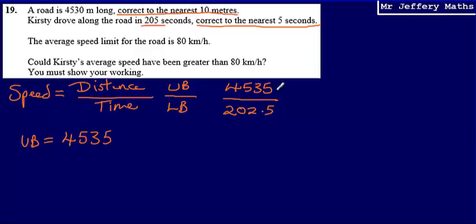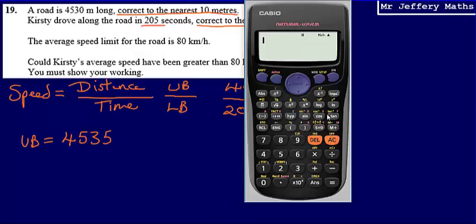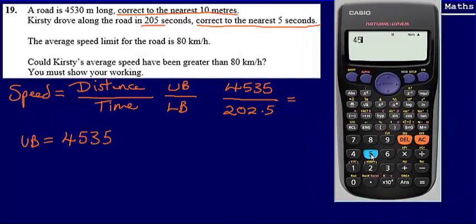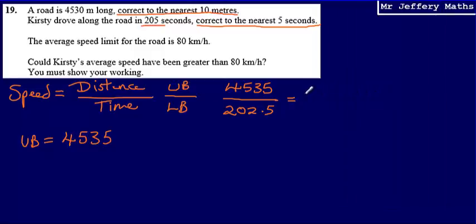Now what we are going to do is work out this calculation. Type that into our calculator: 4535 divided by 202.5.